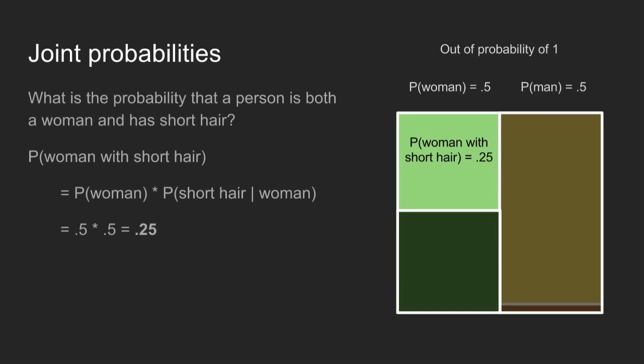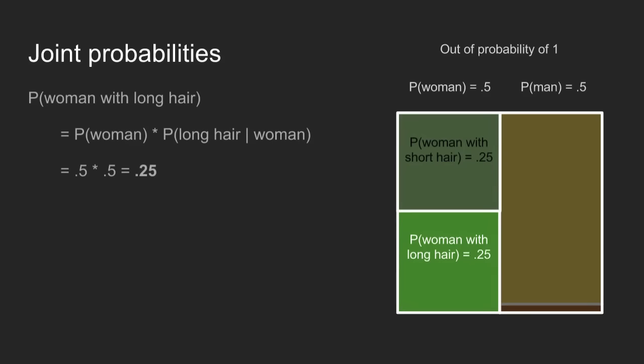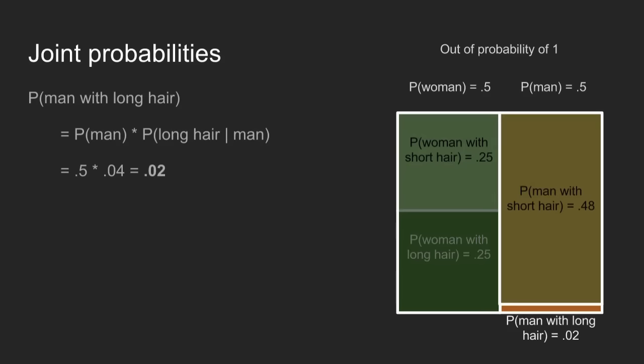Concept two: joint probabilities. What's the probability that a person is both a woman and has short hair? To calculate a joint probability, you first find the conditional probability — if I know they're a woman, what's the probability they have short hair? — then multiply that by the probability they're a woman. So 0.5 times 0.5 gives us 0.25, which is exactly what we expected. And the same is true for all of our different conditions.